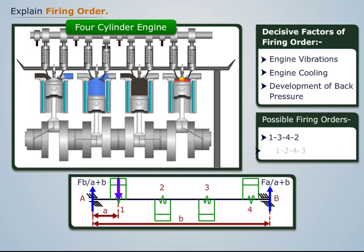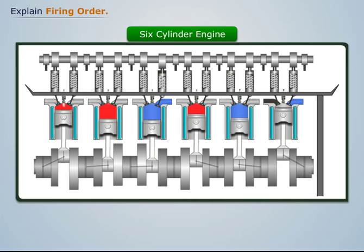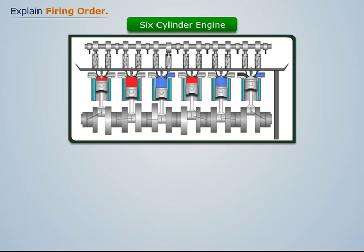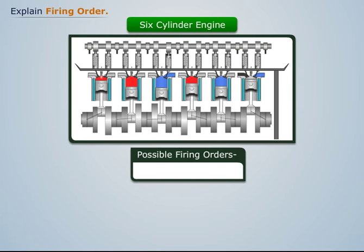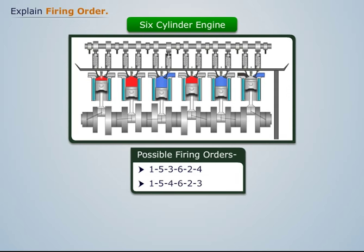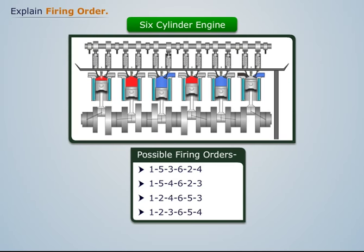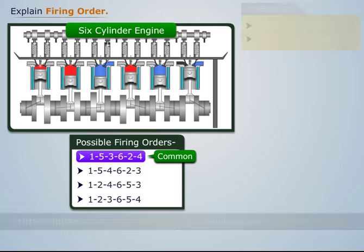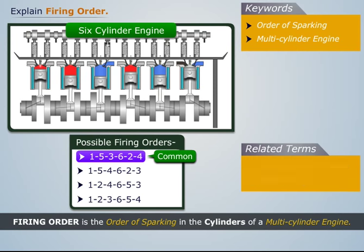Thus the possible firing orders for a four-cylinder engine can be 1-3-4-2, 1-3-2-4, or 1-2-4-3. The firing order 1-3-4-2 is used more commonly. Similarly, for a six-cylinder engine, the possible firing orders can be 1-5-3-6-2-4, 1-5-4-6-2-3, 1-2-4-6-5-3, and 1-2-3-6-5-4. The firing order 1-5-3-6-2-4 is most commonly used. The related terms are...